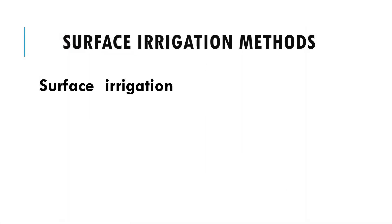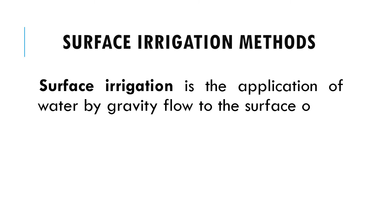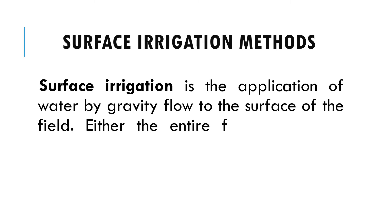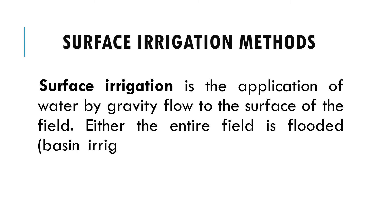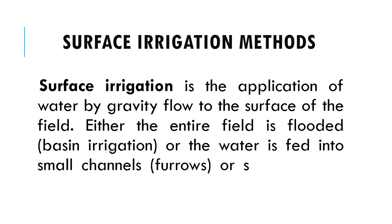Surface irrigation is the application of water by gravity flow to the surface of the field. Either the entire field is flooded — basin irrigation — or the water is fed into small channels, furrows, or strips of land.